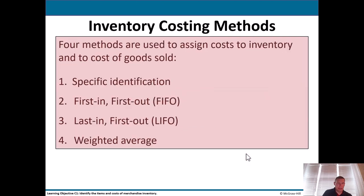There are four main inventory costing methods: specific identification, first in first out (FIFO), last in first out (LIFO), and weighted average. Those are the four main types of inventory costing.